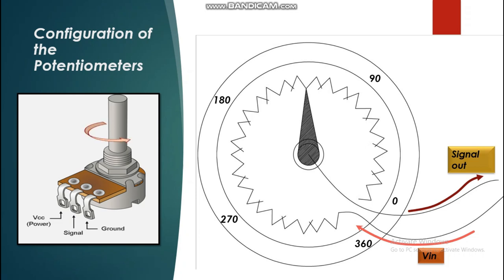We provide the input simply by rotating the knob and setting our desired angle as calibrated. This rotation changes the resistance between the input and output signal in the potentiometer — either increasing or decreasing it. Based on that resistance, the potential drop changes in the potentiometer, and accordingly, so does the output signal.